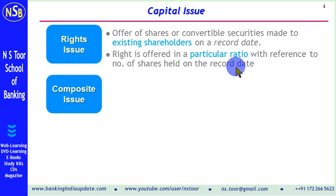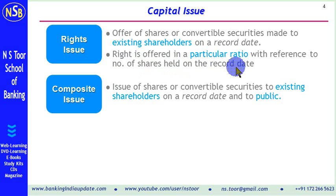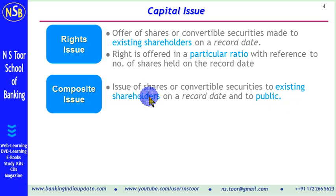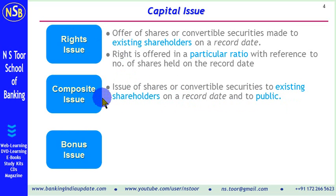Now, what is a composite issue? A composite issue means an issue of shares or convertible securities to existing shareholders on a record date as well as to the public. So when an offer is made to existing shareholders only, it is a rights issue. When the offer is made to existing shareholders as well as to the public, it becomes a composite issue.